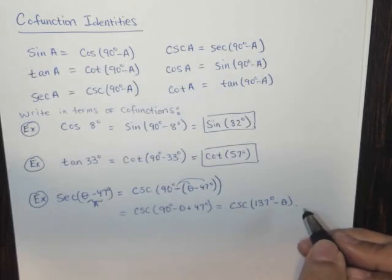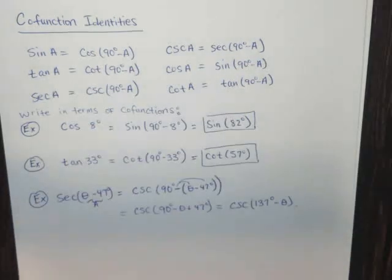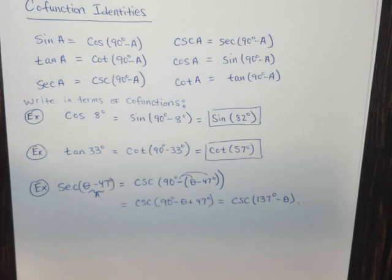We're going to get the cosecant of 137 degrees minus theta. So there you have it. Three really good examples of applying these cofunction identities and they're actually really quite simple.